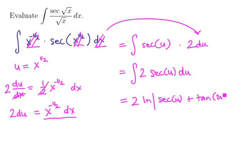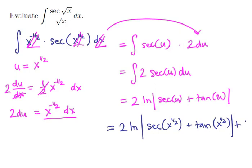And so now we just have the back substitute. We're going to have 2 times the natural logarithm of the secant of x to the one-half plus the tangent of x to the one-half. There's one antiderivative, adding plus c gives us all of the antiderivatives, and so there's our answer.